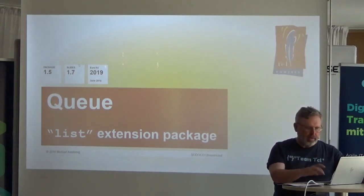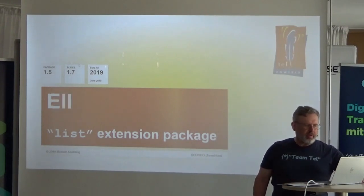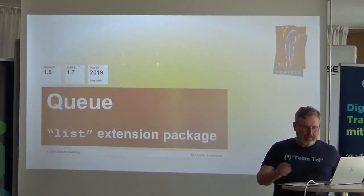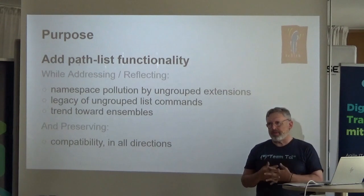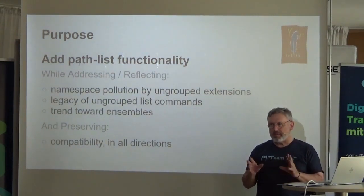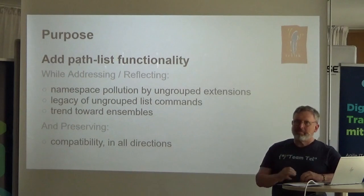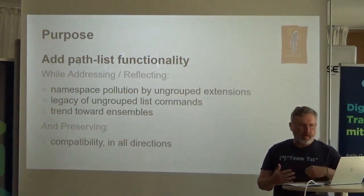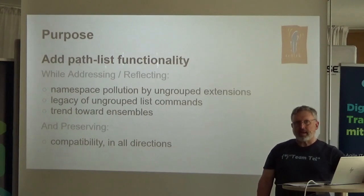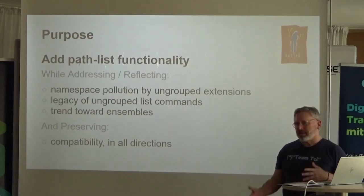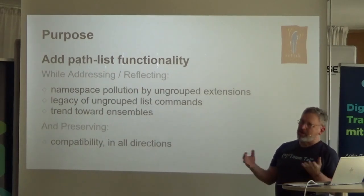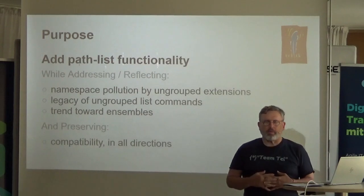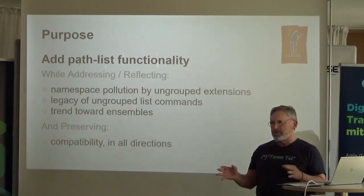So I called this Q, but it could actually have several names — we'll see more later. The idea was I wanted to add some path list functionality that's typically in TM path, combine that with the other list operations, cover the legacy list operations, and follow the trend toward ensembles, while keeping compatibility in all directions. So you can mix Q with all the old operations and never see a difference.